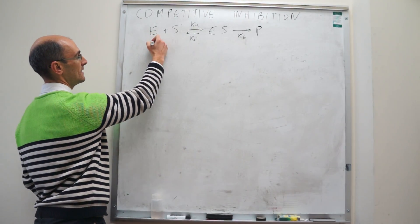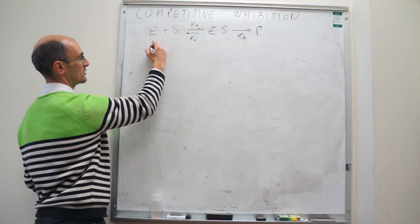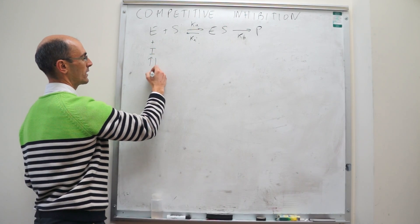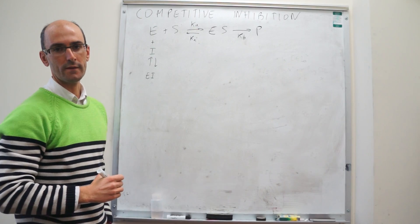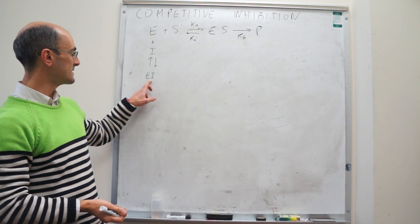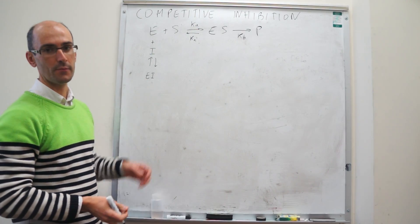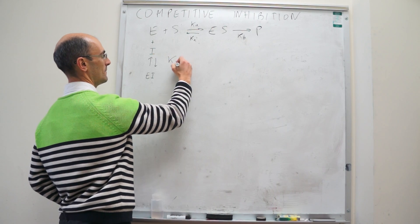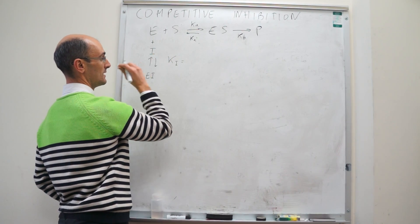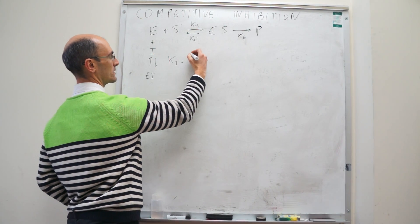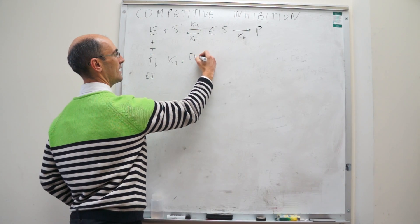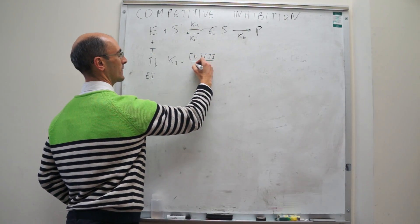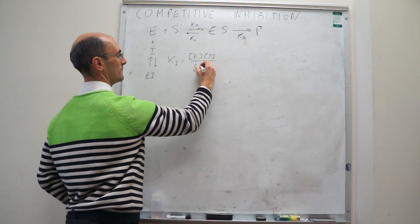This is where the inhibitor is going to bind to the free enzyme. We characterize this binding with the dissociation constant of the enzyme-inhibitor complex, K sub I, which is equal to the concentration of free enzyme times inhibitor over the concentration of the complex.